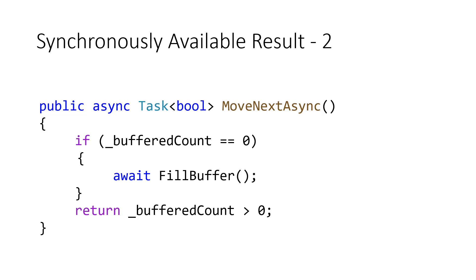Again, most of the time the result is available synchronously. But there are times we end up calling the FillBuffer method — it is an async operation and we don't know when it completes or if it's going to fill the buffer. If there's no data, bufferedCount stays zero; if there is data, it's greater than zero. In one situation the operation completes synchronously and .NET runtime uses a cached Task object. But in other cases where we don't know the result, a new task must be created — we can't use a cached one.